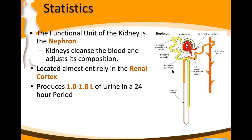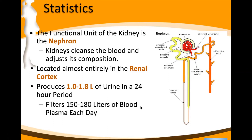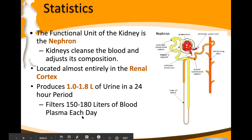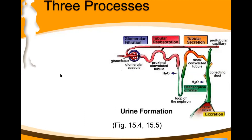We filter about 150 to 180 liters of blood per day. We produce one to two liters of urine in a day — so the vast majority of what's filtered gets reclaimed.